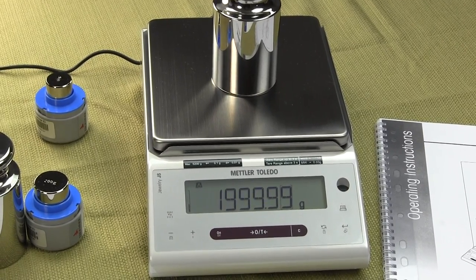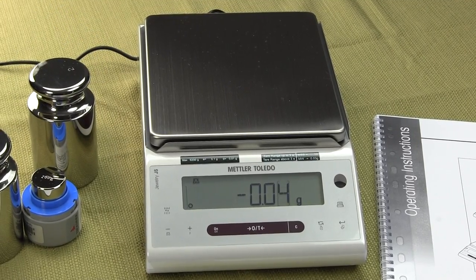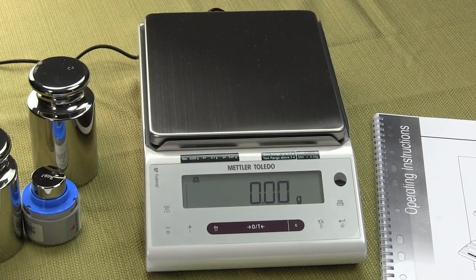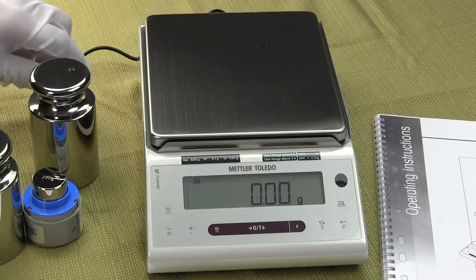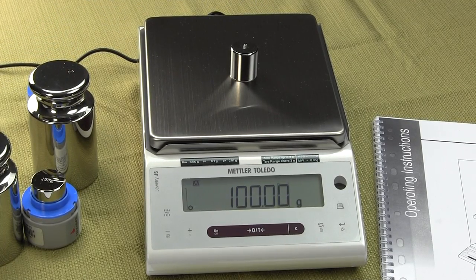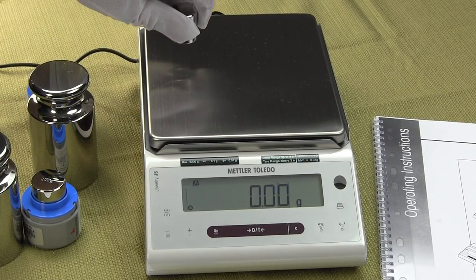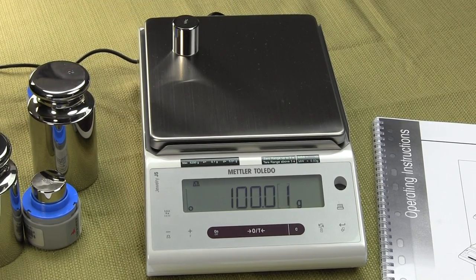So that's 2000 grams. Some of the features with the JS series here from Mettler Toledo, this is the new classic series. You can see the balance performs very quick. These are all class 1 weights.